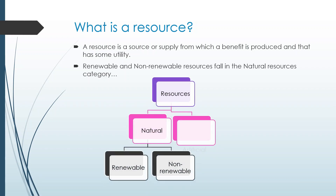To understand this we have to look at this diagram. Resources are divided into two categories: natural and artificial. Natural resources are further divided into two more categories: renewable resources and non-renewable resources.